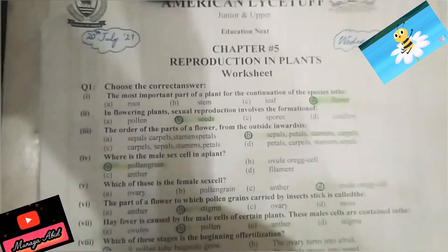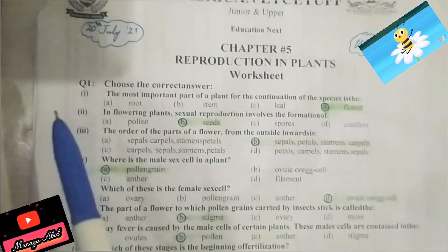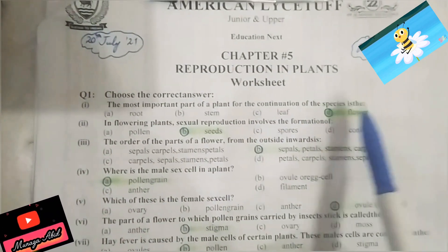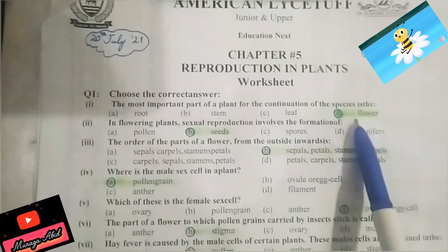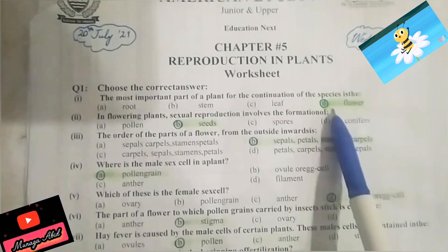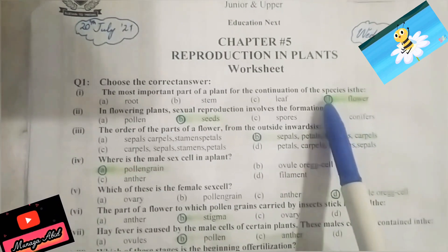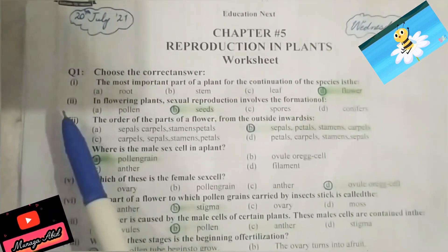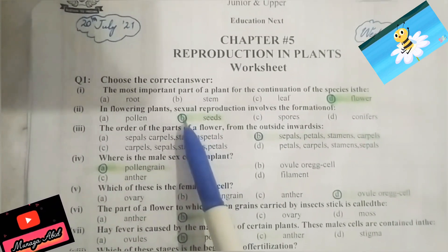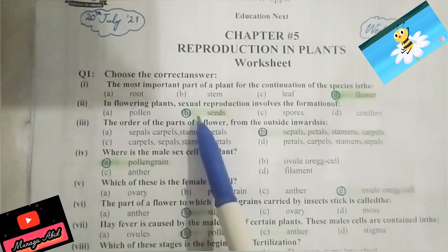Question number 1 is choose the correct answer. Part 1: the most important part of a plant for the continuation of species is the flower. The correct option is D. Part 2: in flowering plants, sexual reproduction involves the formation of seeds. B is the correct answer, because you know that flowering plants produce seeds.